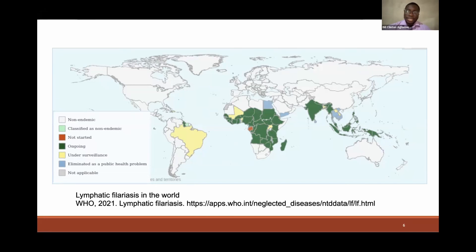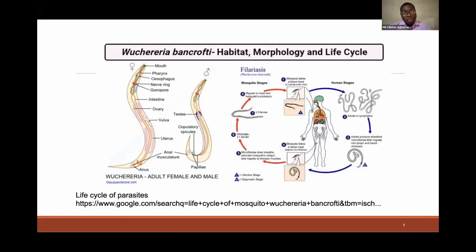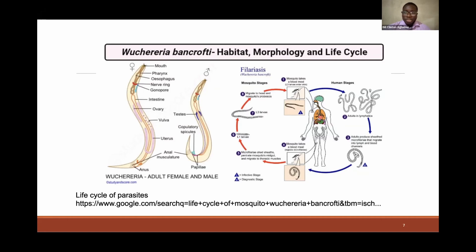For the microfilaria, one of the causative organisms, as I mentioned, is Wuchereria bancrofti. It basically enters the human body through the vector, which is mosquitoes, and finds its way into the afferent lymphatic vessels. At this point, from five to six years, it begins to exhibit some immunomodulatory effects so that it can stay on and be able to proliferate.